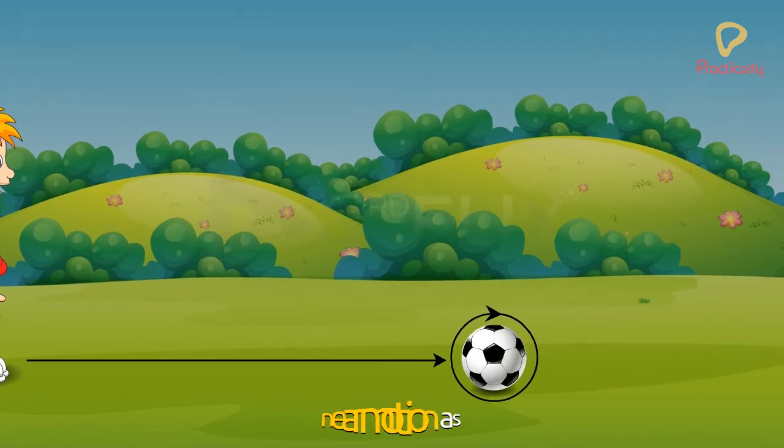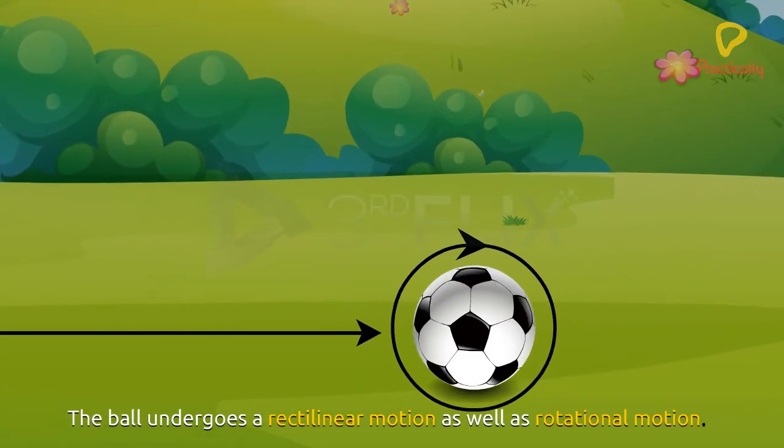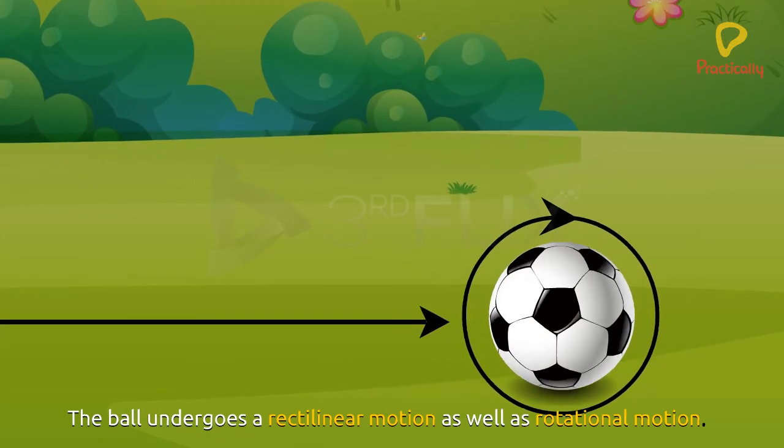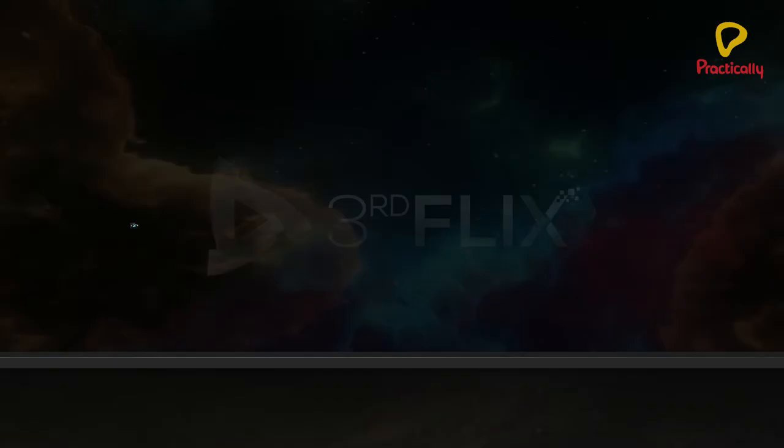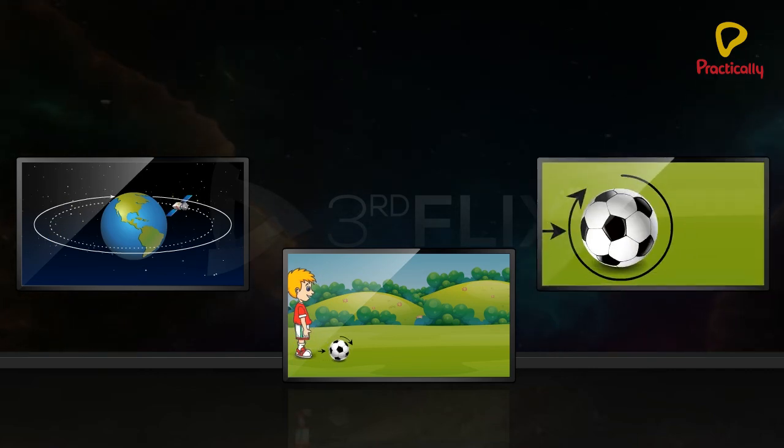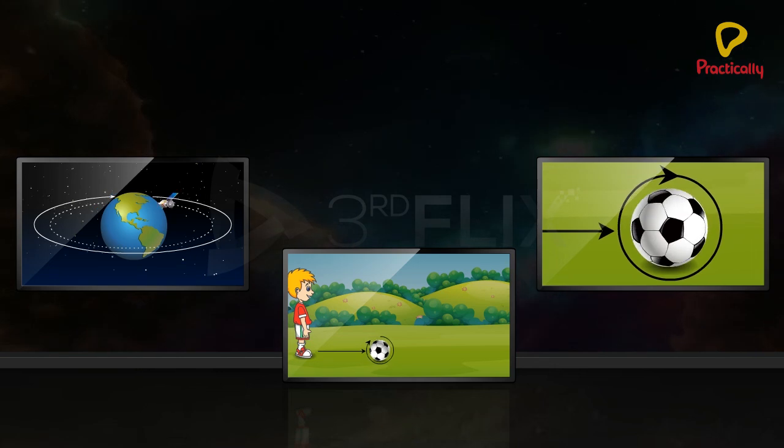If you observe carefully, the ball rotates while moving forward. Thus, the ball undergoes a rectilinear motion as well as rotational motion. Looking at these examples, we can say that an object may be undergoing more than one type of motion at the same time.